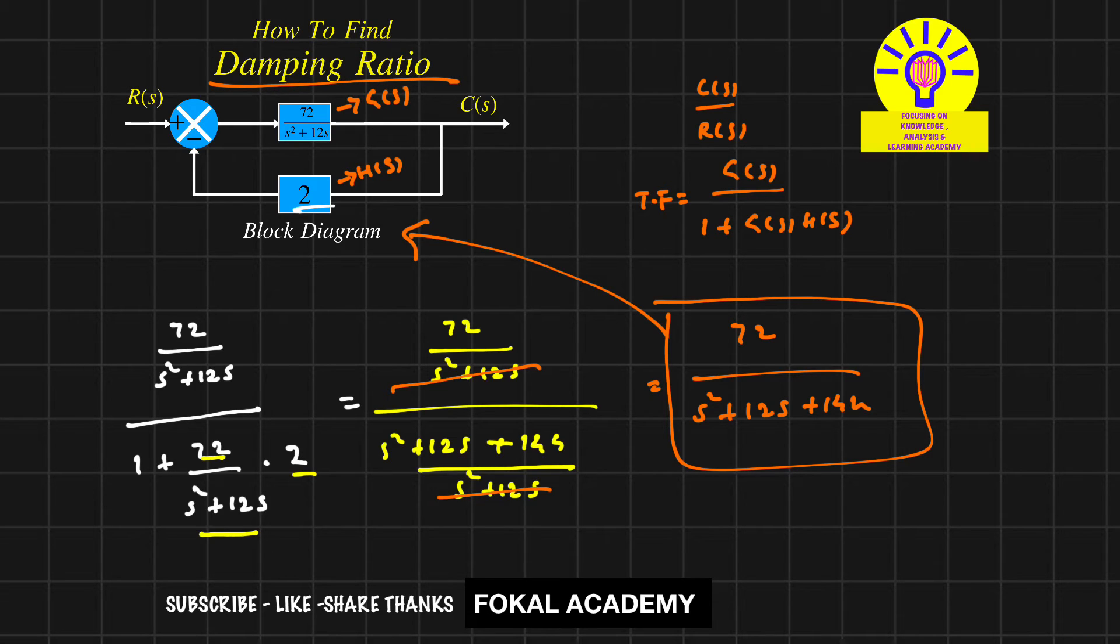We know the standard characteristic equation is s² + 2ζωₙs + ωₙ² = 0. From our transfer function, the characteristic equation is s² + 2s + 144 = 0.